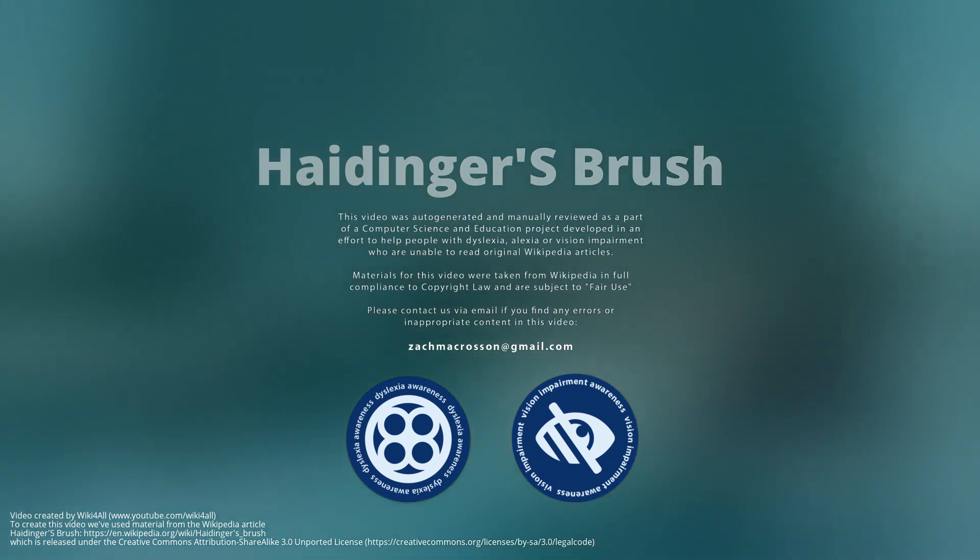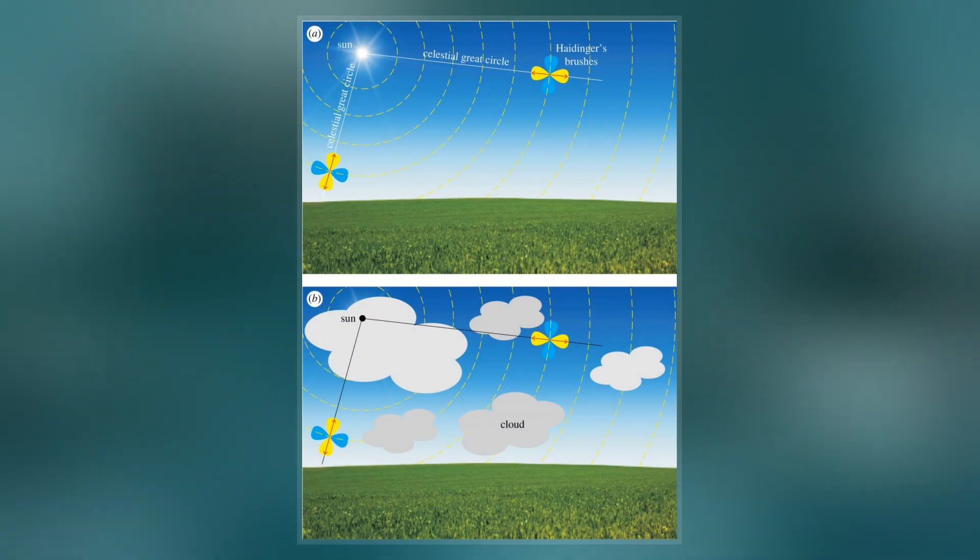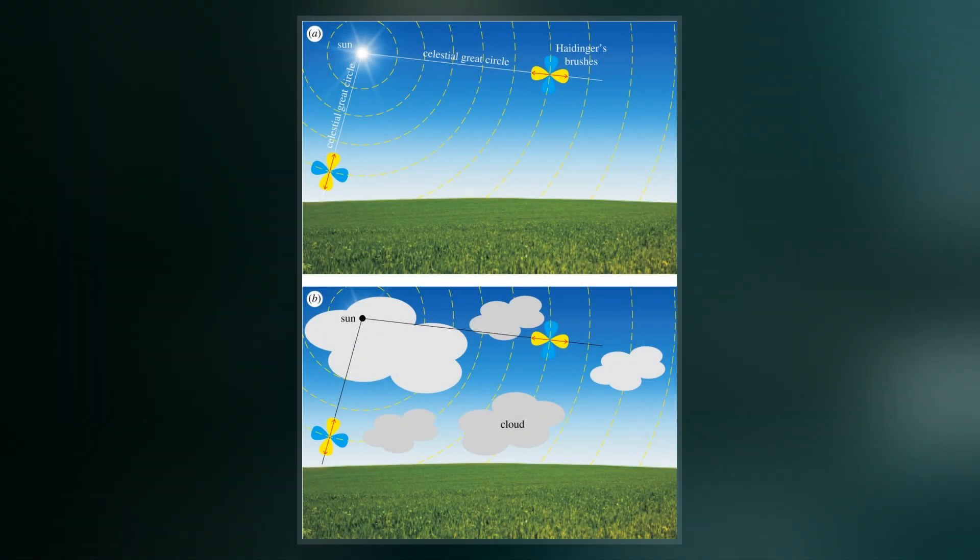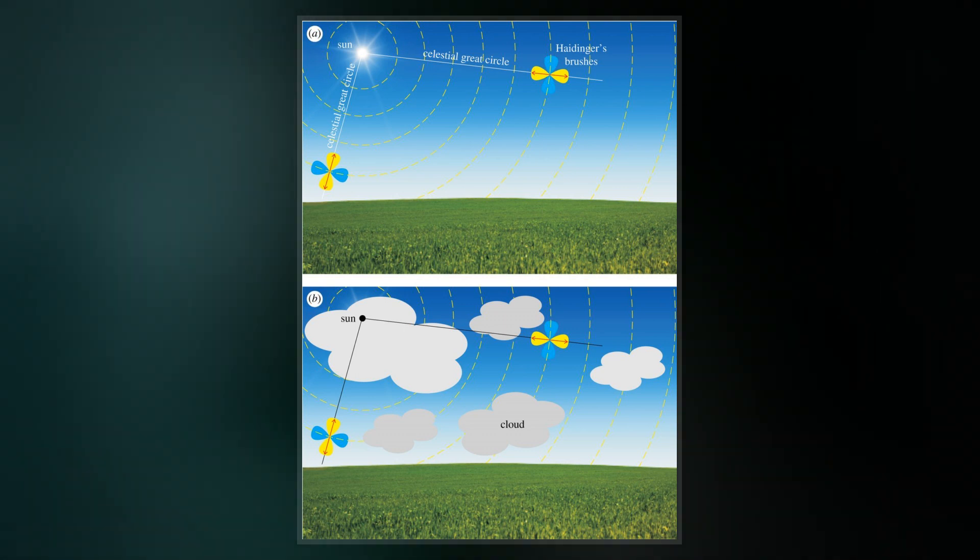Haidinger's brush, more commonly known as Haidinger's brushes, is an image produced by the eye, an entoptic phenomenon, first described by Austrian physicist Wilhelm Karl von Haidinger in 1844.